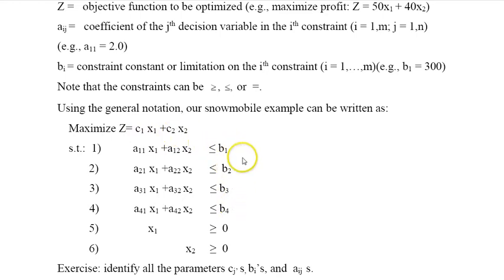So notice that c1 and c2 will always refer to the coefficients in the objective function. b1, b2, b3 will refer to the right-hand side of the constraints. And the aijs will refer to the coefficients here in the constraints.